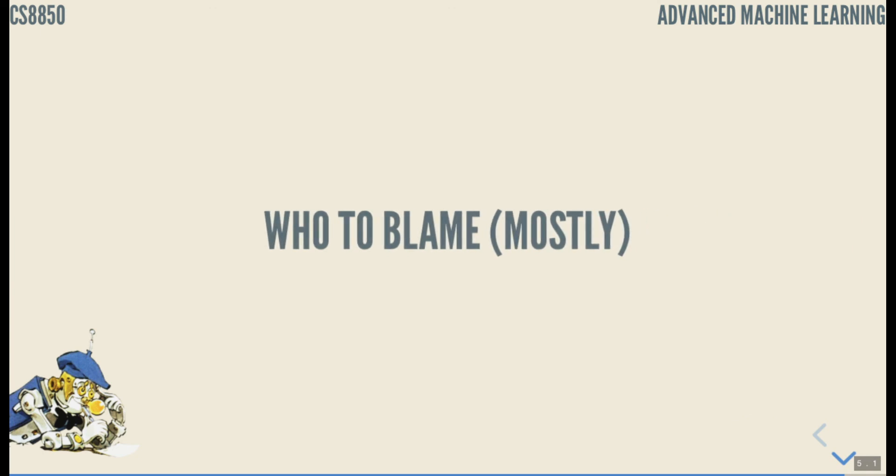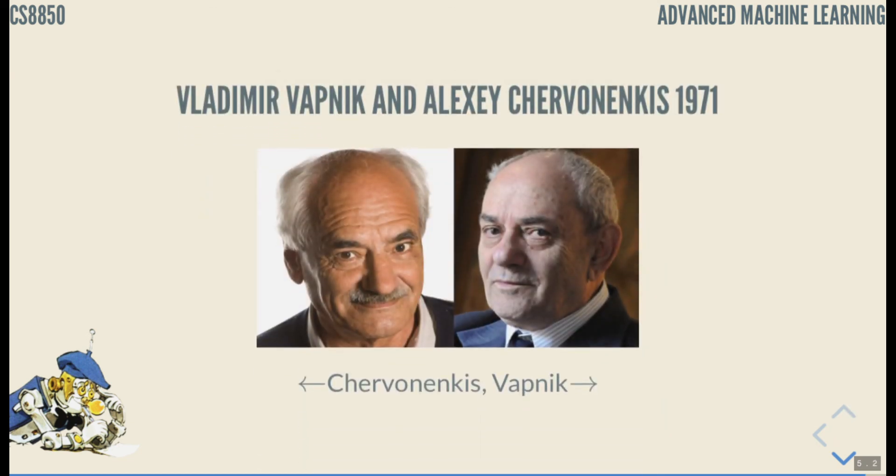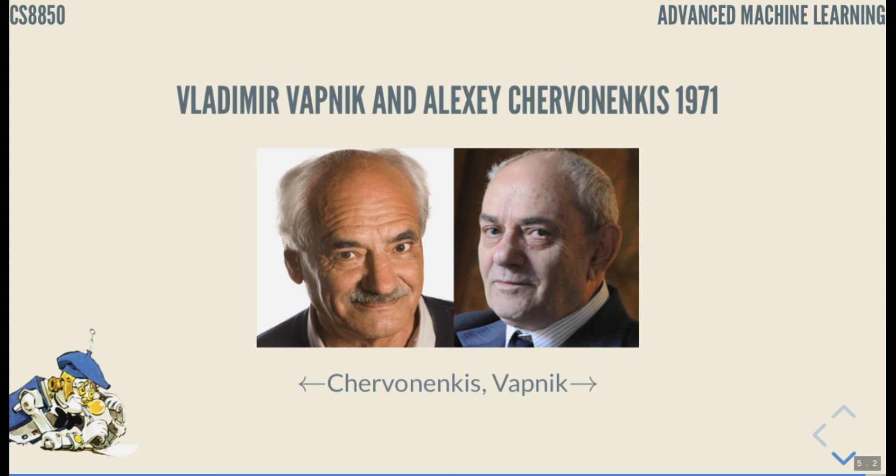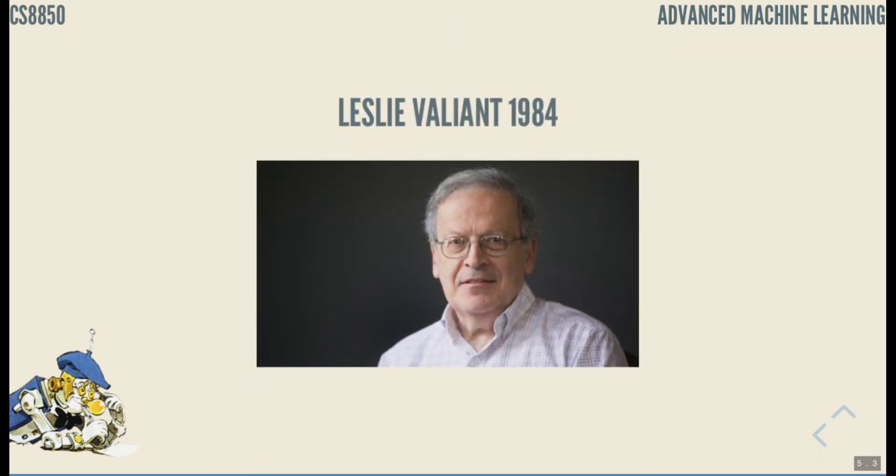So who are we to blame for that theory and for creation of that theory for us? So mostly it's those two people Vladimir Vapnik and Alexei Chervenenckis. In 1971 they created the computational learning theory and Leslie Valiant in 1994 created PAC-learnability definition. So he introduced a different precise mathematical definition of which hypothesis classes are learnable and in 2010 he got a Turing Award for that. That's the Nobel Prize of Computer Science.